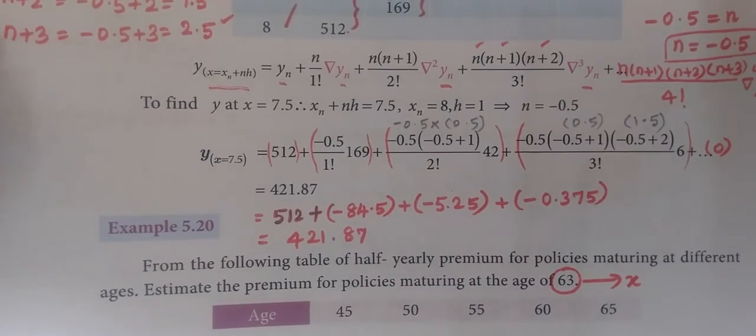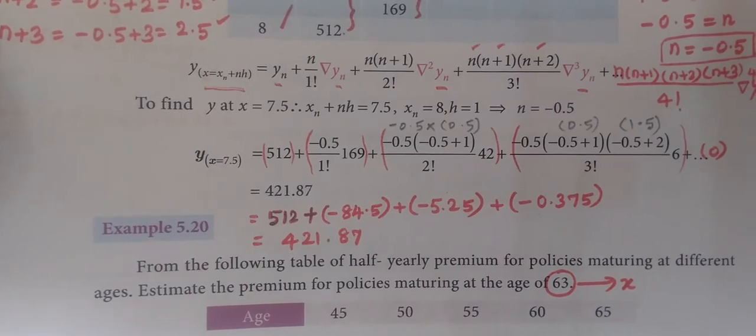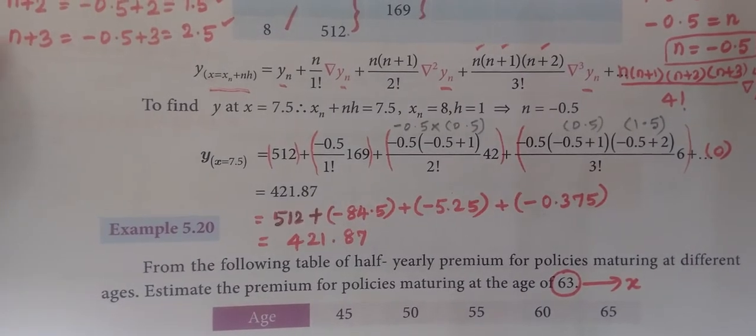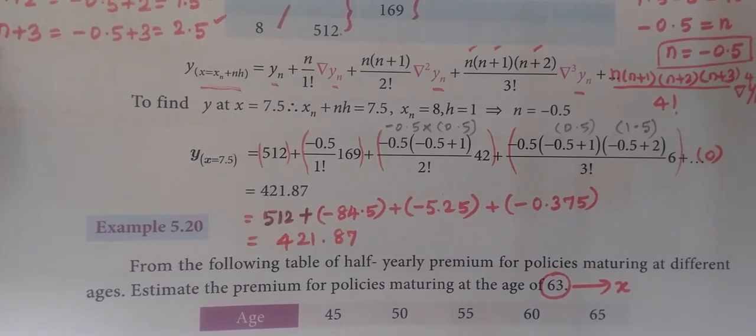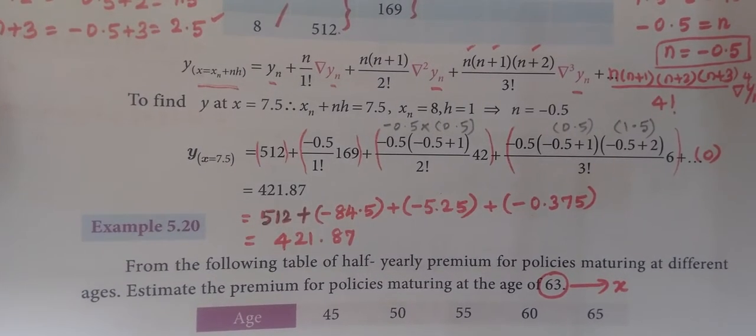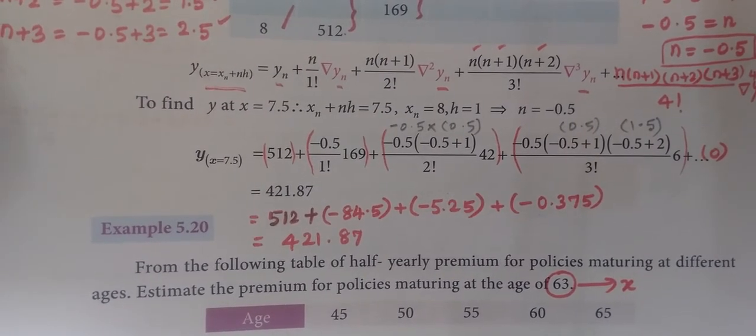Now, Example 5.20 Business Math. From the following table of half-yearly premium for policies maturing at different ages, estimate the premium for policies maturing at the age of 63.